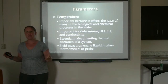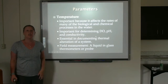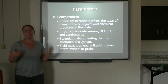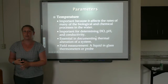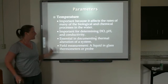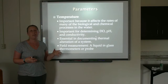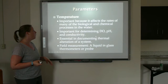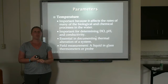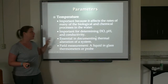We'll start out with the most basic of parameters: temperature. This ends up being a really important one because it affects the rates of everything else. What happens chemically and biologically is often controlled by temperature. In general, chemical reaction rates are faster at higher temperatures, biological metabolic rates are faster at higher temperatures, and volatile chemicals are going to be more likely to evaporate out of warmer water. It's very important for determining dissolved oxygen, pH, and conductivity, as all of these parameters are temperature corrected, so it's really important to measure temperature.